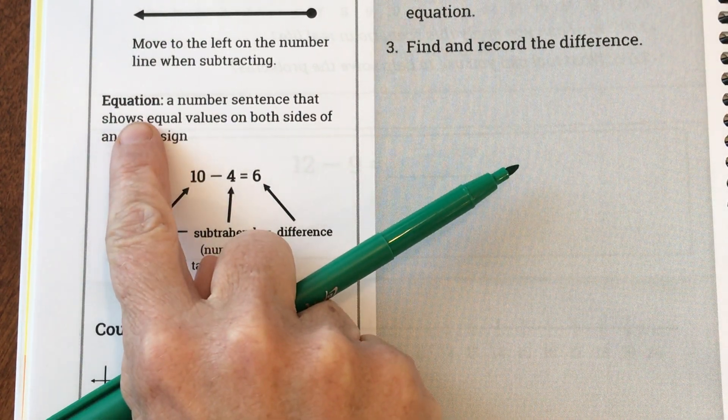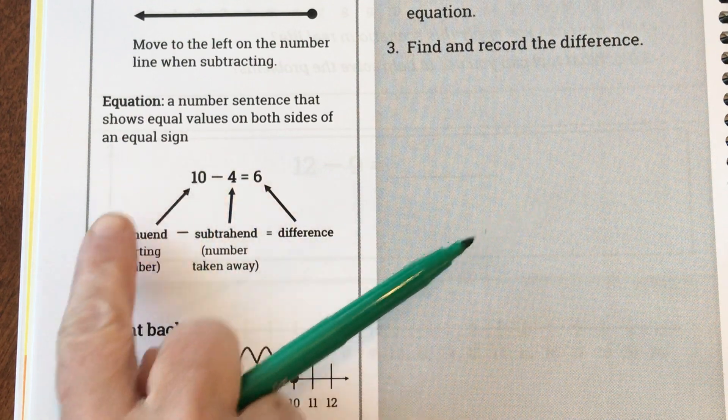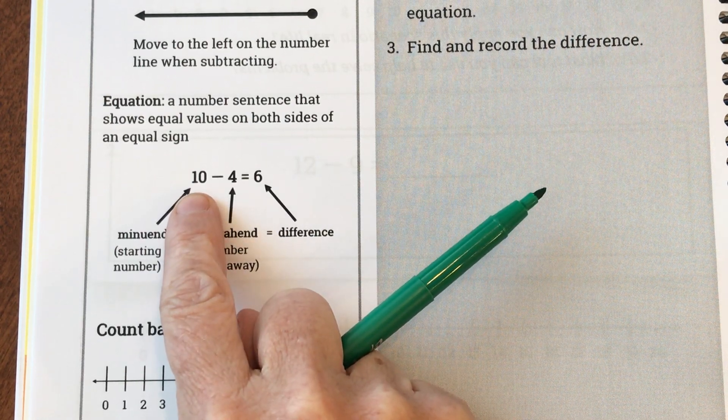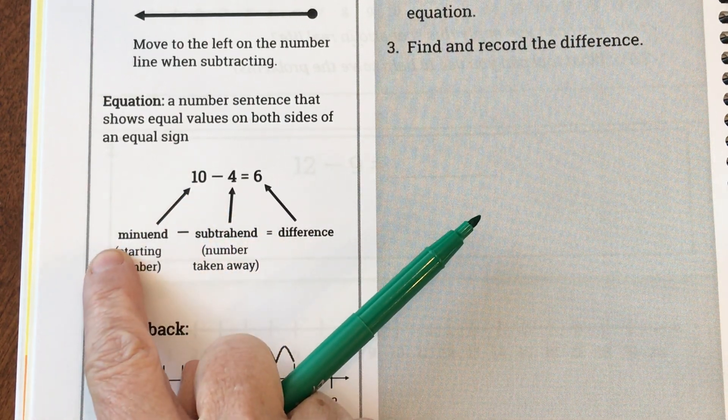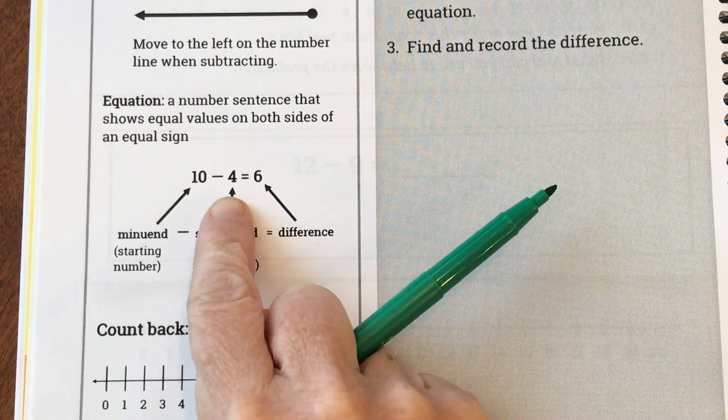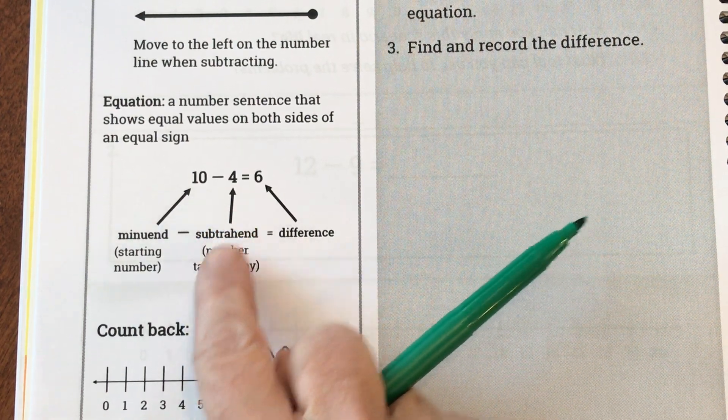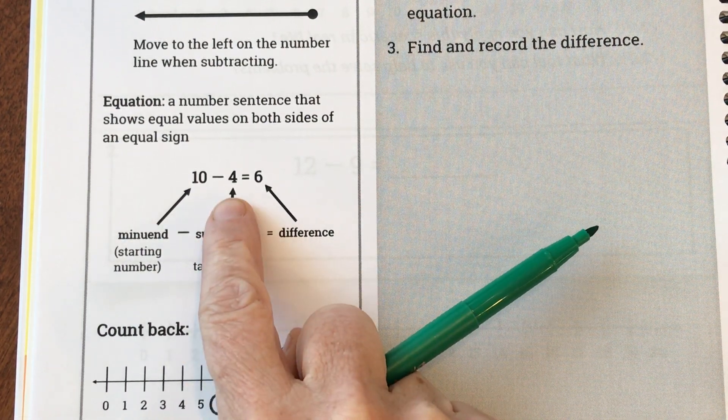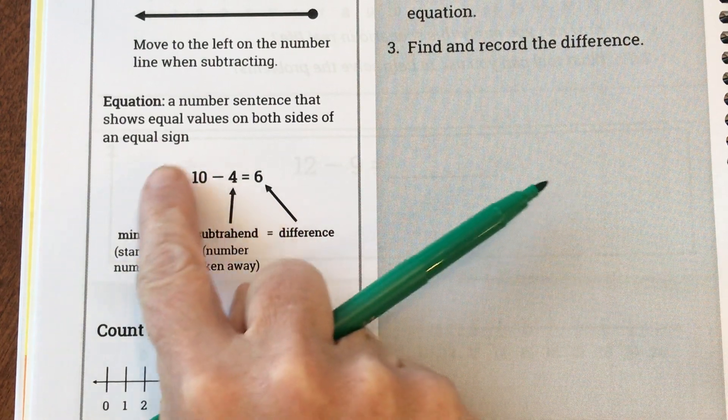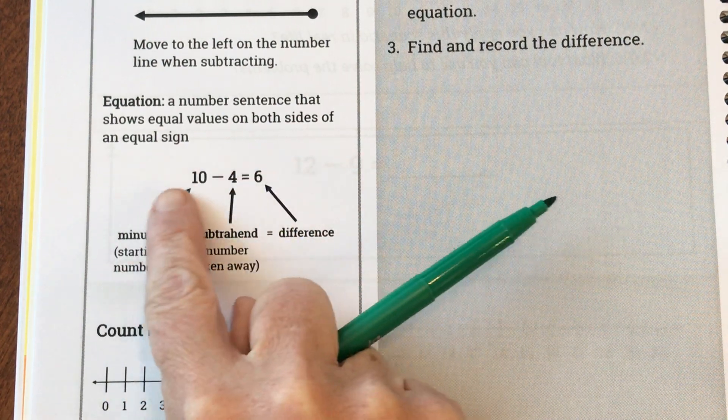Then our next word is an equation. An equation is a number sentence that shows equal values on both sides of the equal sign. So here's an example of a subtraction equation. The first number is called our minuend and it's our starting number. It's how much you start with, what you have. And then we're going to subtract the subtrahend. That's the number that's going to be taken away or subtracted and then you have an equal sign and then you have six is our difference. So we have 10, we subtract 4 and we're left with 6. This is called an equation.